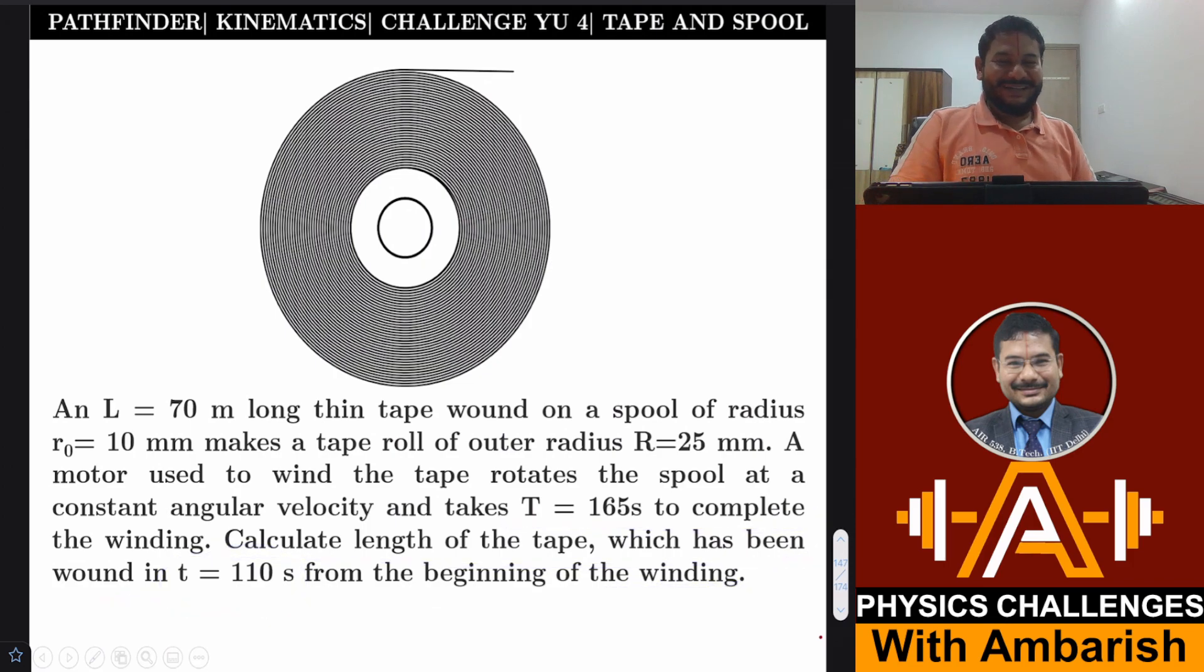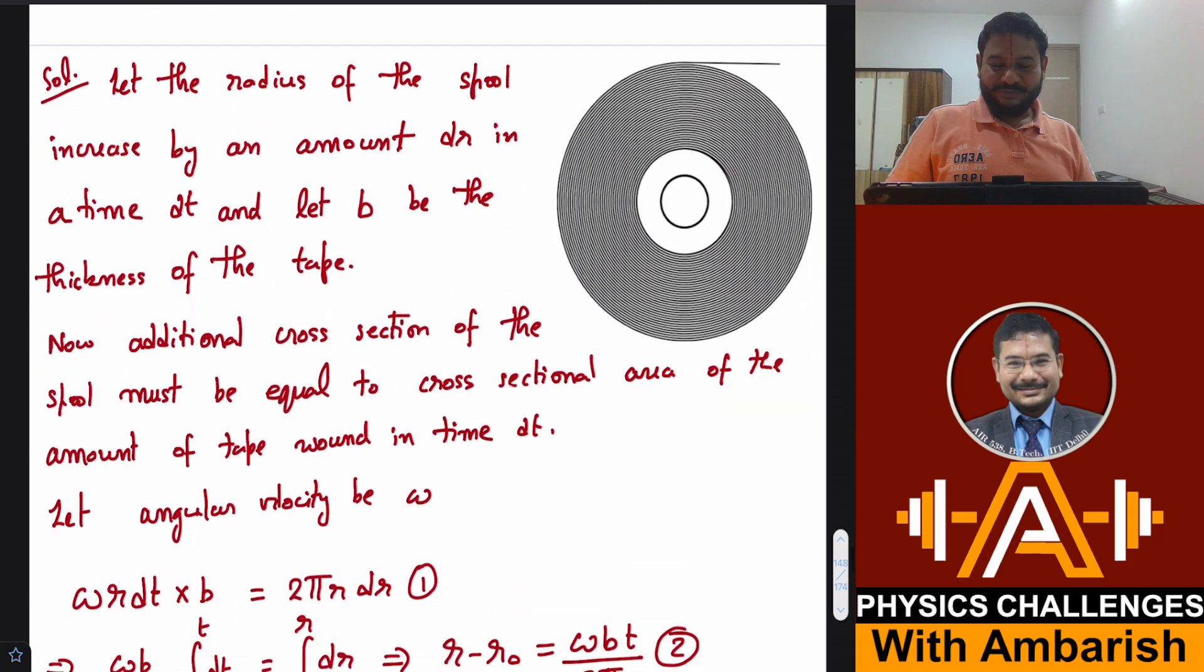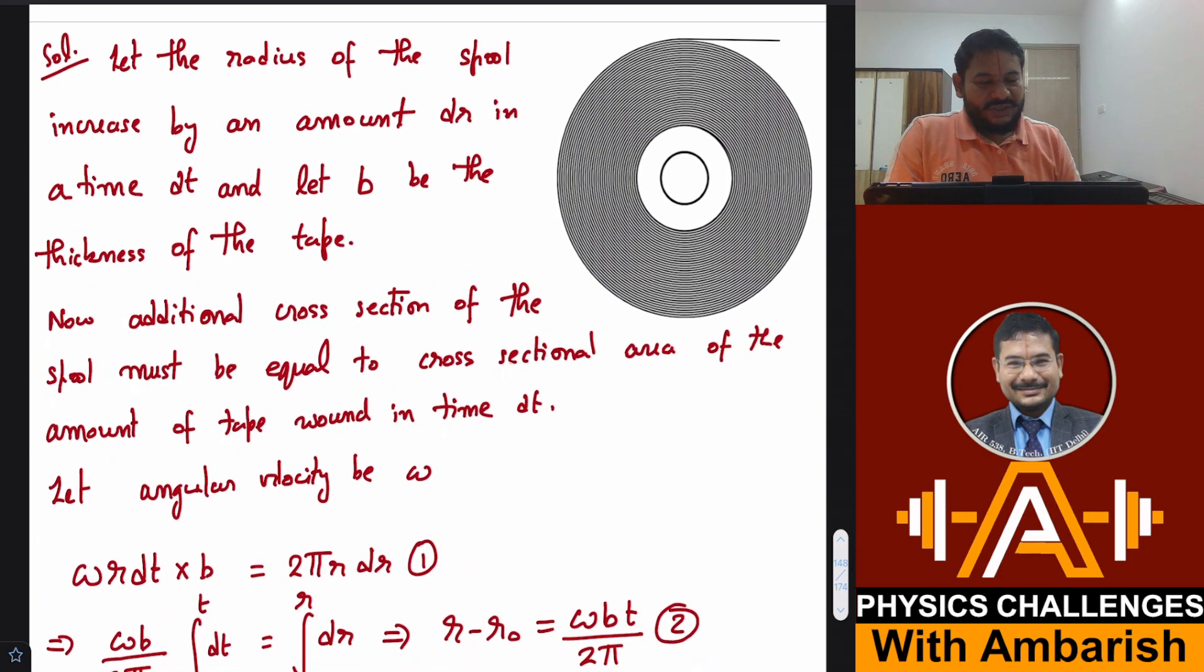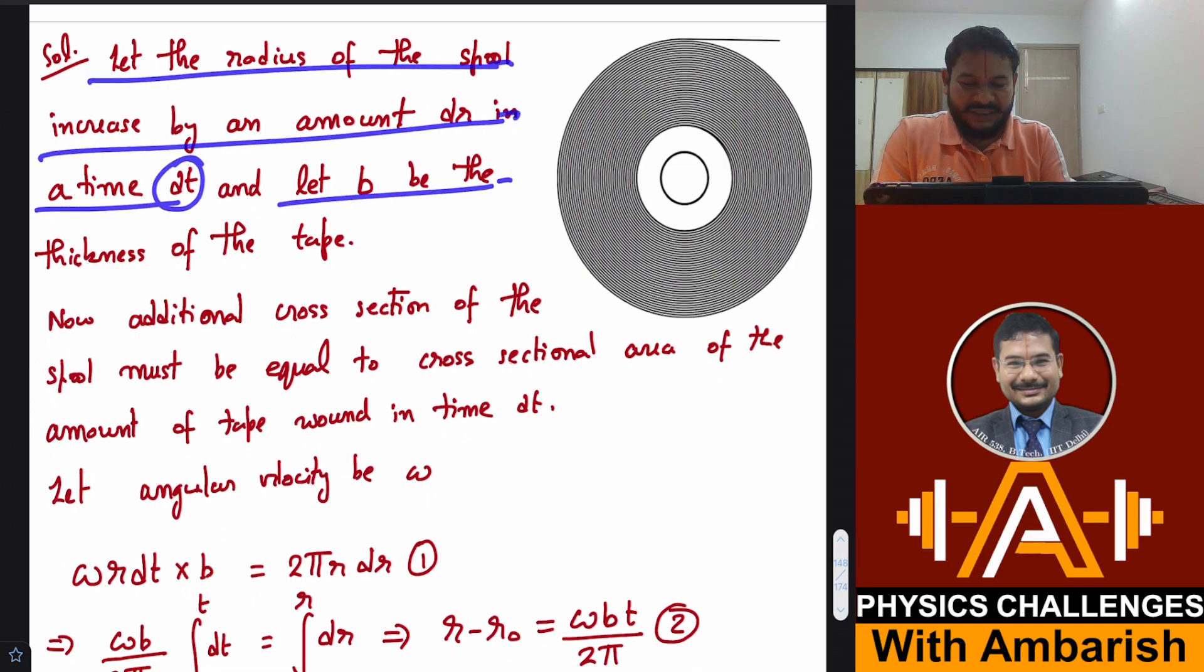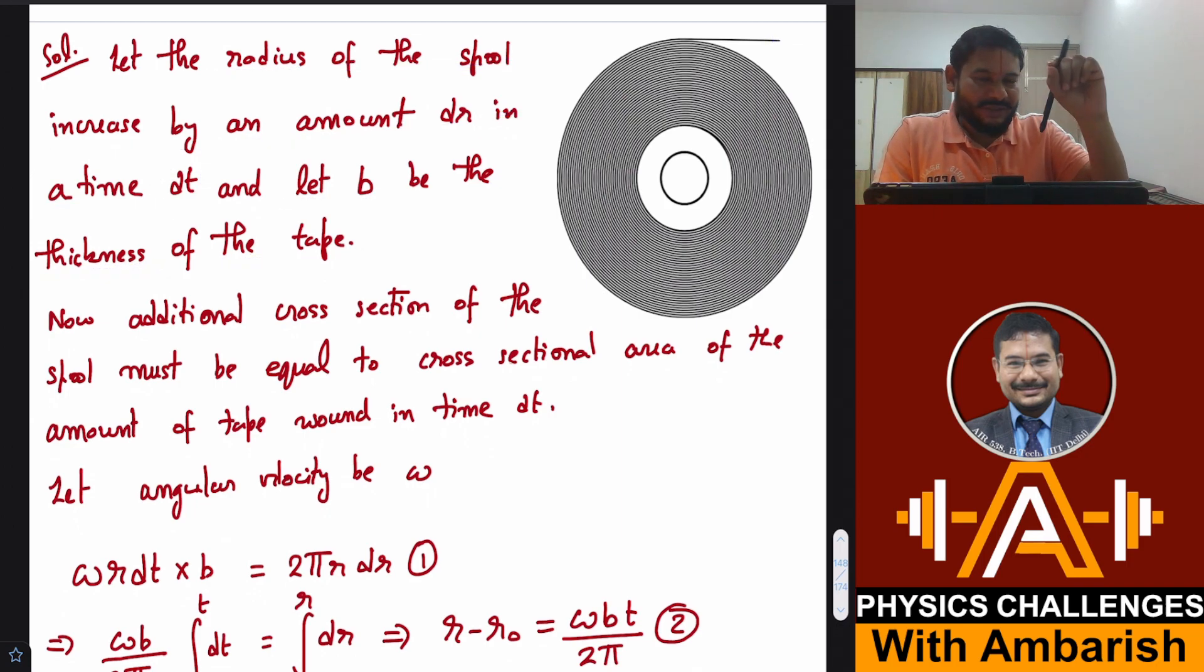If you want, you can give it a try. I will get into my analysis right away. So what's happening, the spool radius is increasing as the spool keeps on winding. Let's say at some instant the radius is r and in dt time the radius increases by some amount dr. Let the radius of the spool increase by an amount dr in a time dt and let b be the thickness of the tape. This tape has very fine thickness, small thickness, maybe of the order of micrometers.